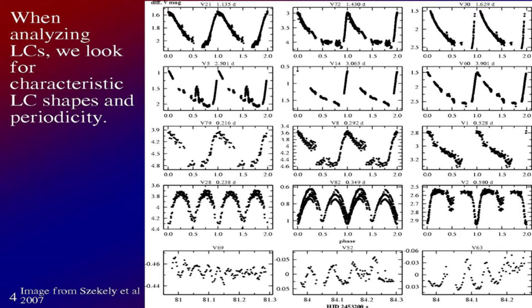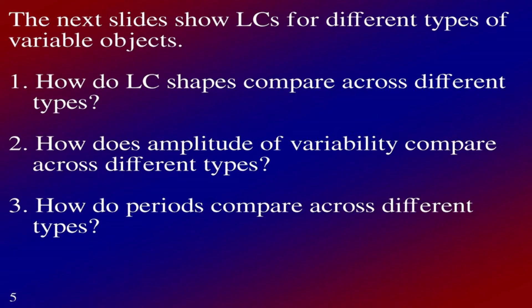When we analyze light curves, we look for characteristic light curve shapes and periodicity. I put up this diagram to show a whole bunch of light curves, and if you take a look, you can see they all look different — they have different characteristic shapes. The time axis is also different for different types, so there are longer and shorter period variables here. We have a steep rise and longer fall shape, more sinusoidal variations, and also some with more irregular variations at the bottom — those are a different type of variable star, not as strictly periodic.